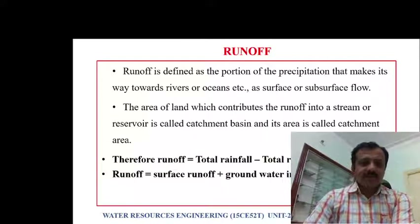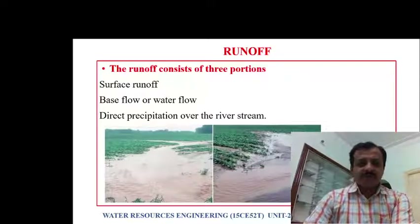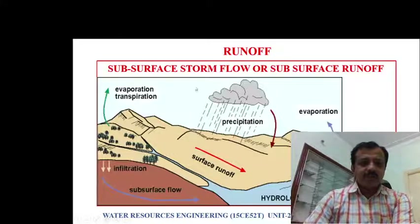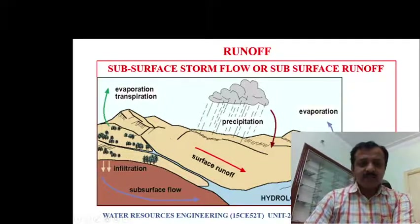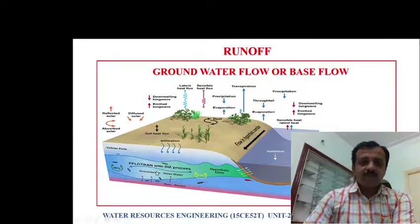Runoff is that portion of precipitation which flows over the land after undergoing various types of losses. There are three types of runoff: surface runoff, subsurface flow or interflow, and direct precipitation over a river. The groundwater flow, where water infiltrating into the soil reaches the groundwater and flows from one place to another, is called groundwater flow or base flow.